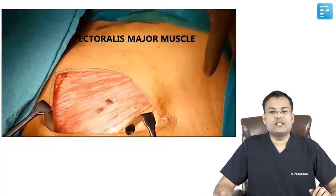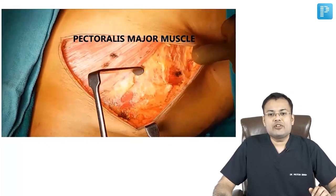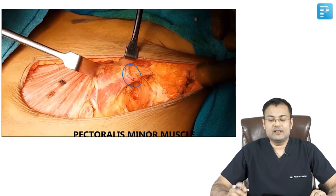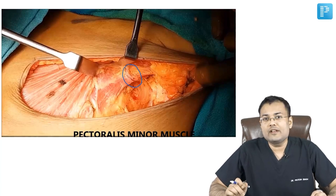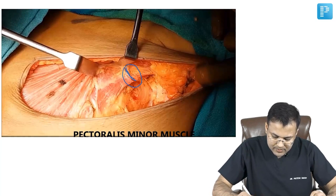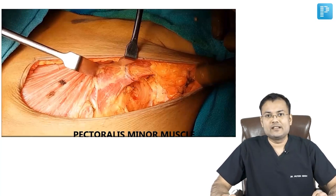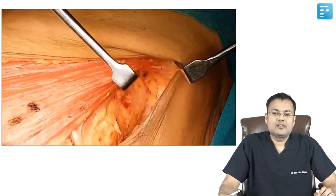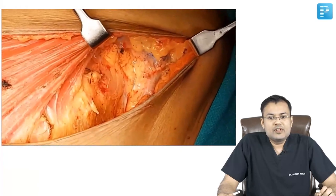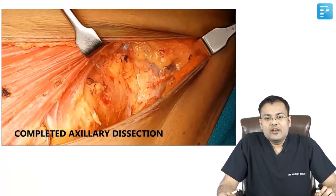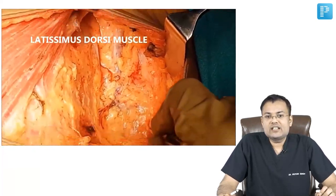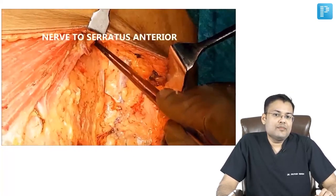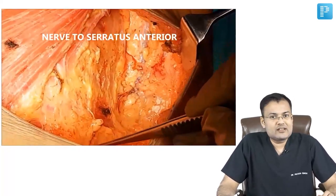After removal of the specimen, you can see pectoralis major muscle and behind it pectoralis minor. There is a nerve and vessel — this is the medial pectoral nerve and vessel. Now see the picture after complete axillary dissection: level 1 and level 2 lymph nodes have been removed. You can see the thoracodorsal pedicle, the nerve to serratus anterior — long thoracic nerve — and the latissimus dorsi muscle.